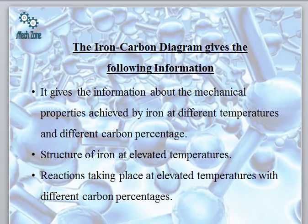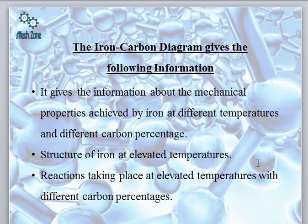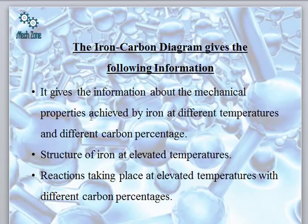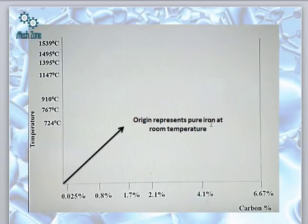The structure of iron at elevated temperatures: iron exists in two different structures, that is FCC (face-centered cubic) and BCC (body-centered cubic). Which phase or structural identity is obtained at elevated temperatures will also be indicated by the iron-carbon diagram. Additionally, the various reactions taking place at elevated temperatures with different carbon percentages are also indicated by the iron-carbon diagram.